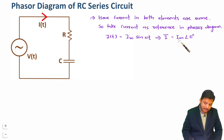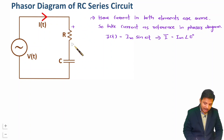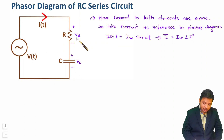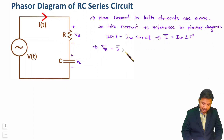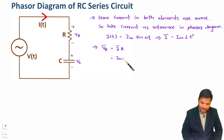Now let's understand what happens with voltage. The total voltage V(t) gets divided into VR across the resistor and VC across the capacitor. For VR in phasor form: VR = I·R = Im∠0° × R = Im·R ∠0°. So VR has a phase angle of zero degrees.